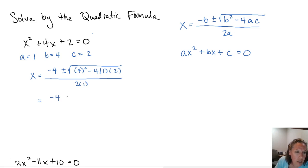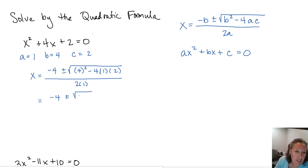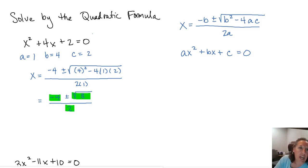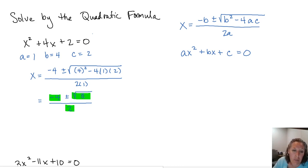So negative 4 plus or minus: 4 squared is 16, and 4 times 1 times 2 is 8. So 16 minus 8 gives us an 8 underneath that square root. In the denominator, 2 times 1 is 2. Now remember, we cannot divide out any common factors unless we take them out of all three terms, and we can't divide something out under a square root with something outside a square root. So we do need to simplify that square root of 8.